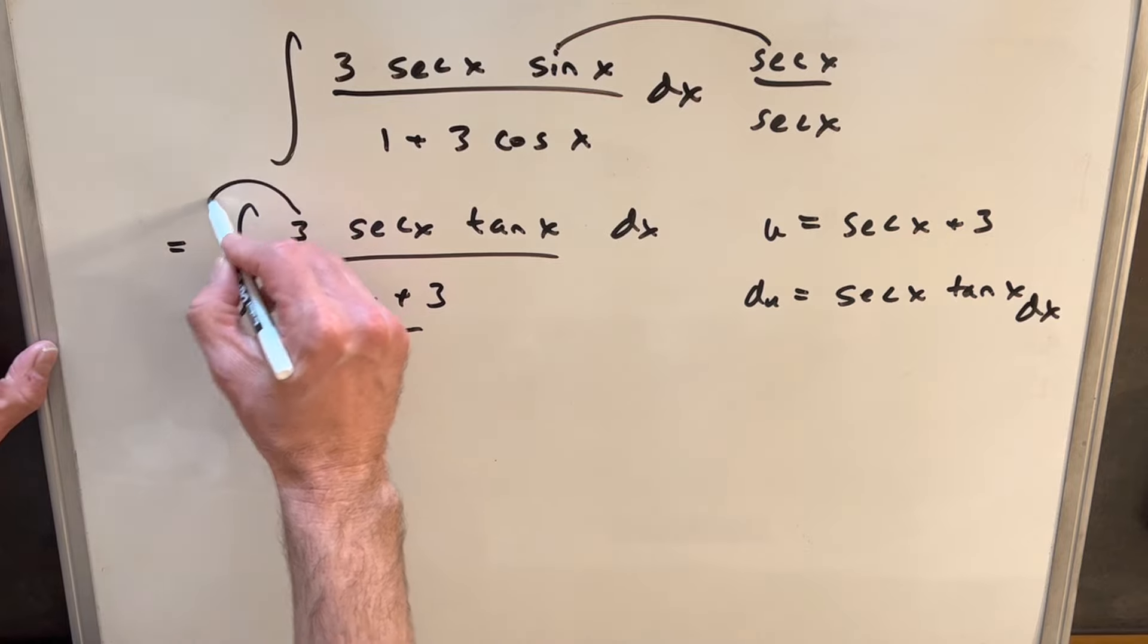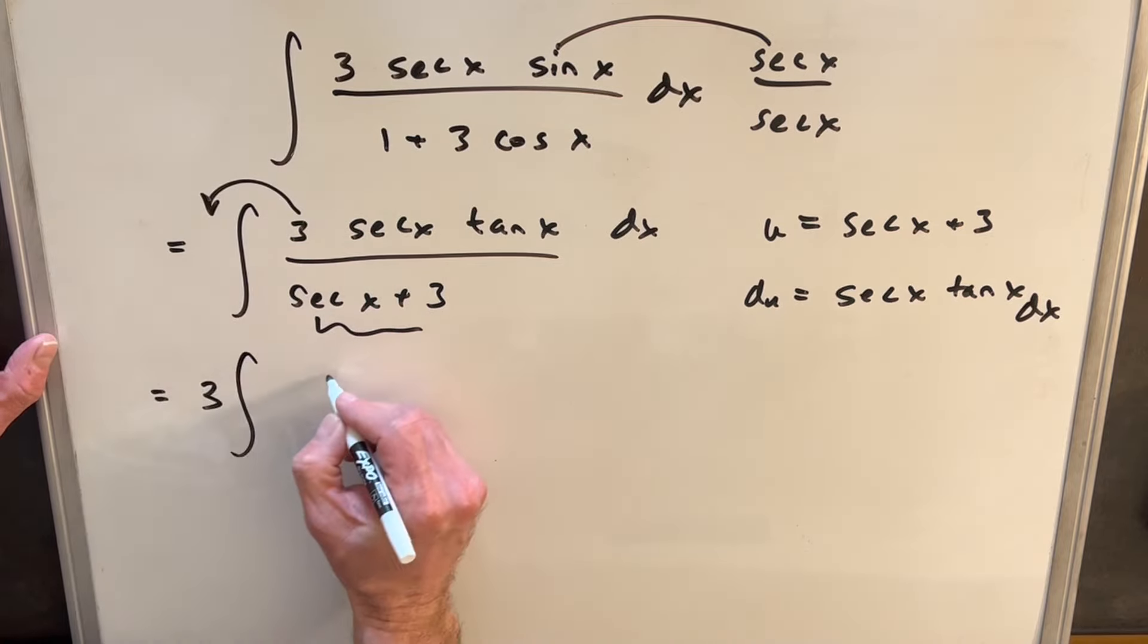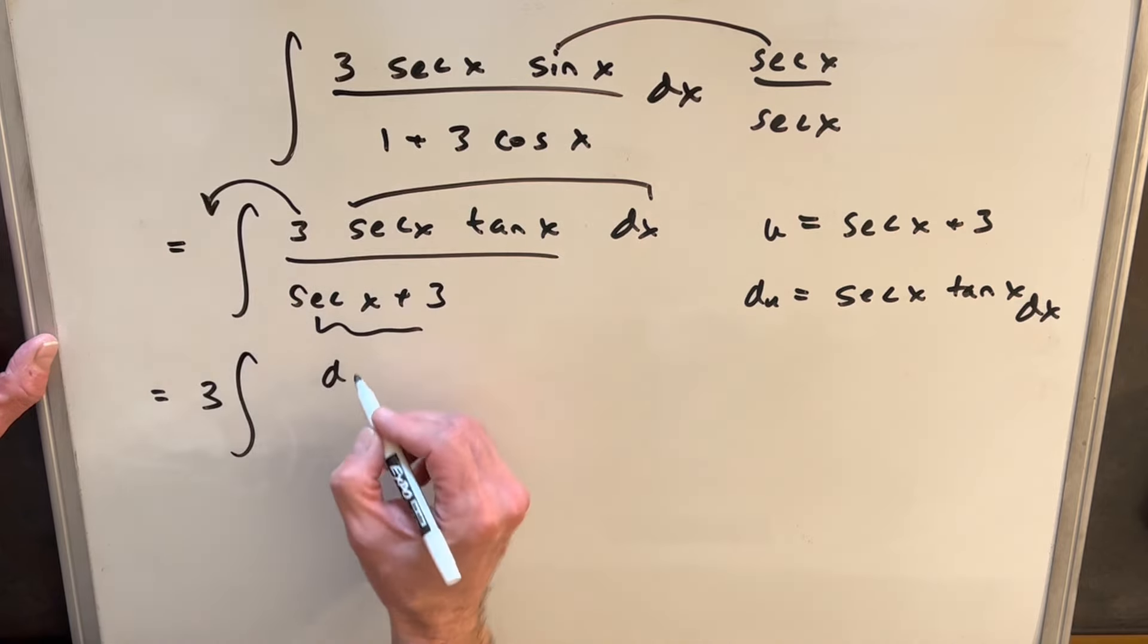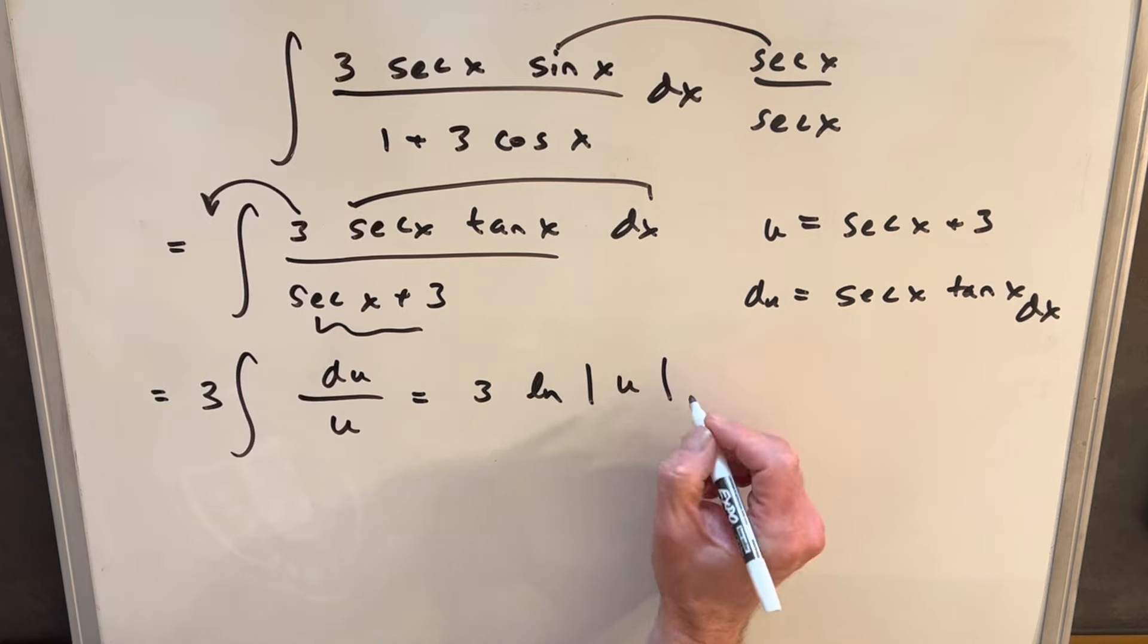So I'll make the substitution. I'm going to bring this 3 out front. We have this here is our du, so we have du over u. And we know how to do this. This is just going to be 3 natural log absolute value of u.